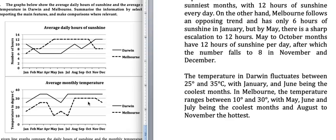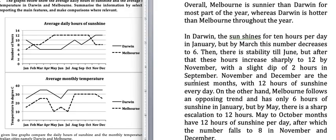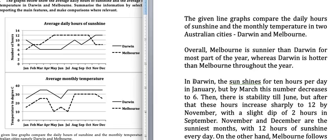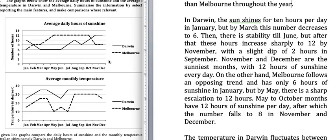A few important things to note: first, when no year is given, you have to write the whole graph in the present tense. Second, you have to write the overview after the introduction — the introduction should be just one sentence, and then the overview follows immediately. The overview can go a bit lengthy, but in this graph it was not needed. Then you give the data in two paragraphs, covering the general trends.